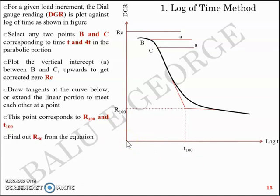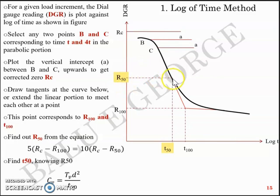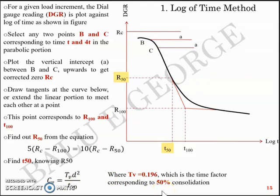From R₁₀₀ and Rc, you can find R₅₀ using the equation: R₅₀ = (Rc + R₁₀₀) / 2. Knowing R₅₀, draw a line parallel to the x-axis; where it meets the curve, drop a perpendicular to the x-axis to get t₅₀. Knowing t₅₀, you can find the coefficient of consolidation: cv = Tv · d² / t₅₀, where Tv for 50% consolidation is 0.196, so cv = 0.196 · d² / t₅₀.